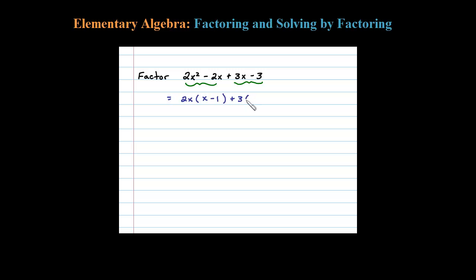So if I factor out a positive 3, what will be left is X minus 1. Notice here now I'm going to think of this as a binomial, something plus something. Now these two terms as a binomial have X minus 1 as a GCF.